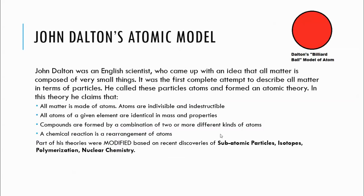John Dalton's atomic model is the billiard ball model. You can see the diagram — that's how he thought an atom looks. He did not really know that anything was inside the atom. He just said an atom is like that: you cannot break it, you cannot destroy it. Then he gave us all his atomic theories.